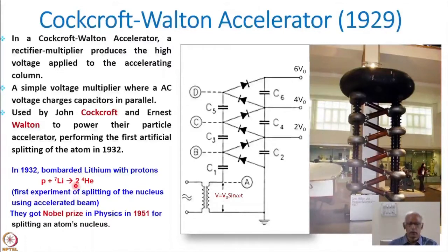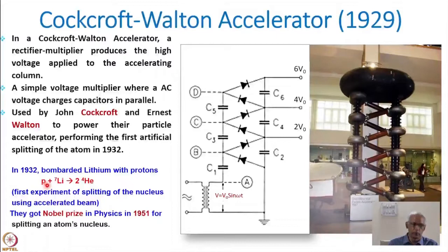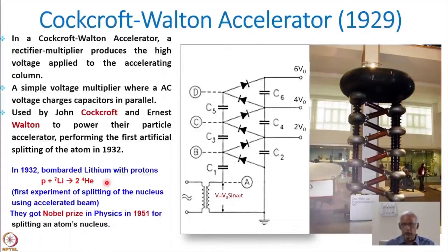Before that, all experiments were done using alpha particles from radioactive ion sources. This was the first experiment using artificially accelerated beams where the nucleus was split — lithium-7 split by proton bombardment producing two helium nuclei. At that time it was such an exciting experiment that they received the Nobel Prize in Physics in 1951 for this splitting of the atom's nucleus.